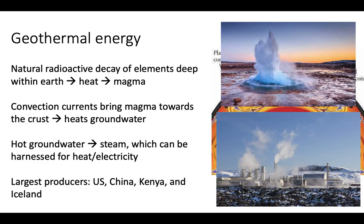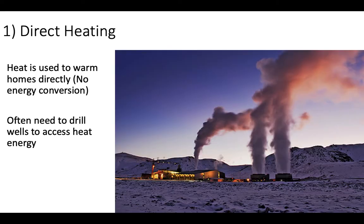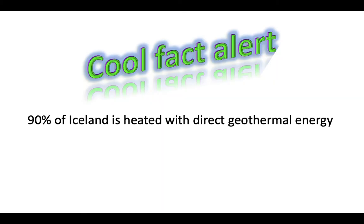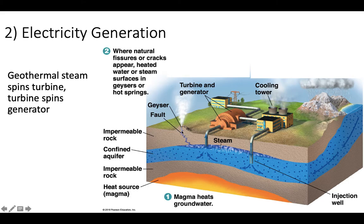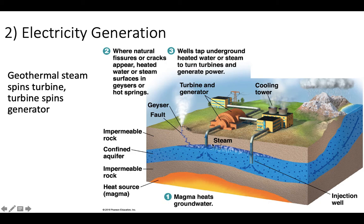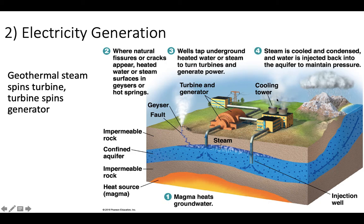We see a lot of geothermal in the United States, China, Kenya, and Iceland. In Iceland, they use direct heating — capturing steam from groundwater and using it to directly heat homes right into the radiator, without converting to electricity first. About 90% of Iceland is heated this way. A lot of geothermal plants in the United States use the steam to generate electricity: steam turns a turbine, which spins a generator. Magma heats groundwater; if there's a natural crack in the ground, that produces a geyser. Otherwise, the steam can be tapped with a well and used to turn a turbine, then cooled, condensed, and injected back into the aquifer to maintain water pressure.